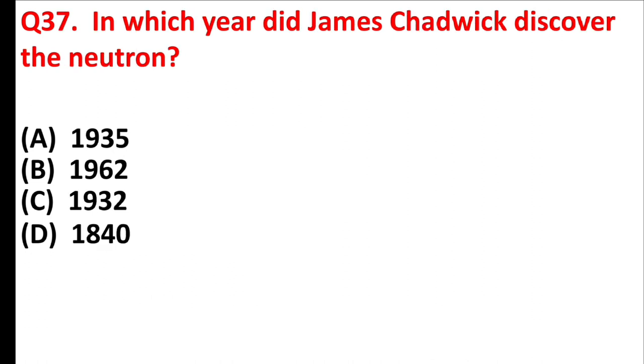In which year did James Chadwick discover the neutron? Answer is Option C, 1932.